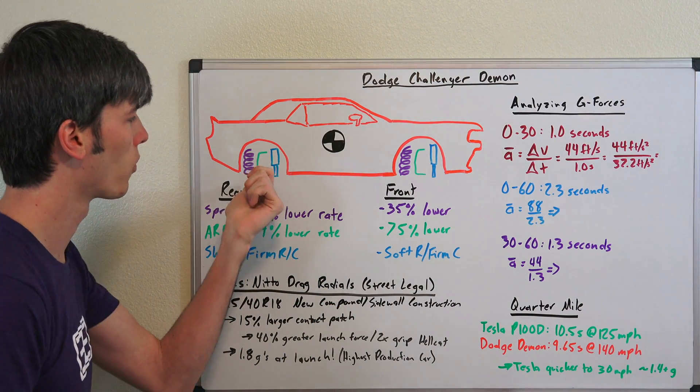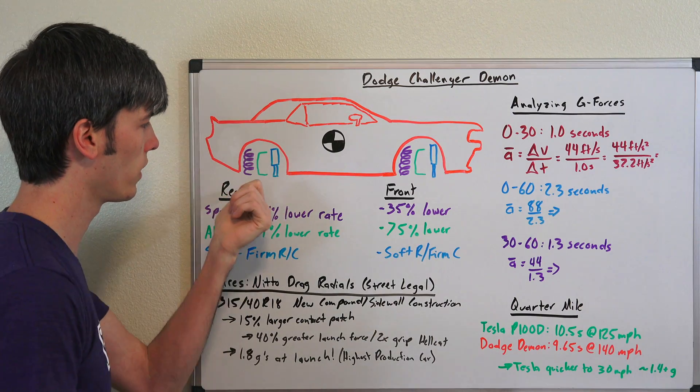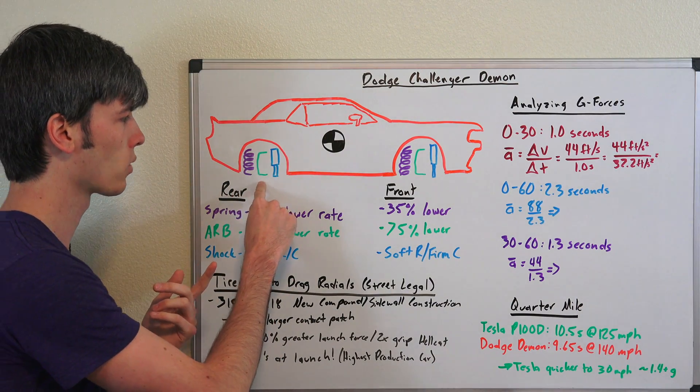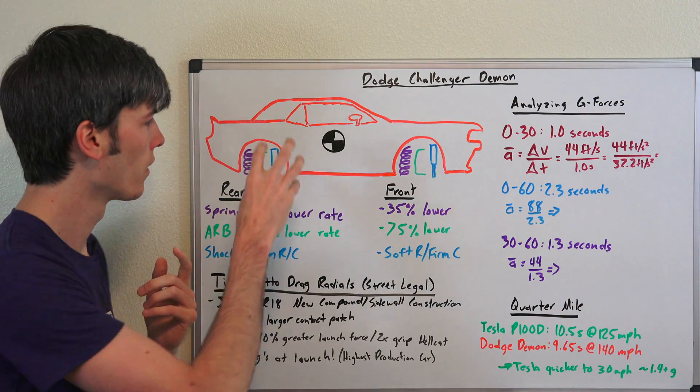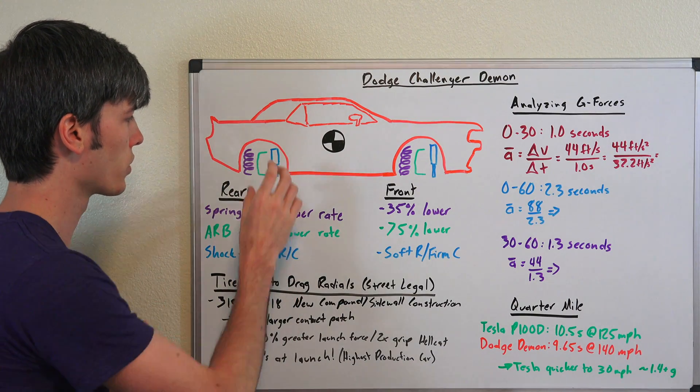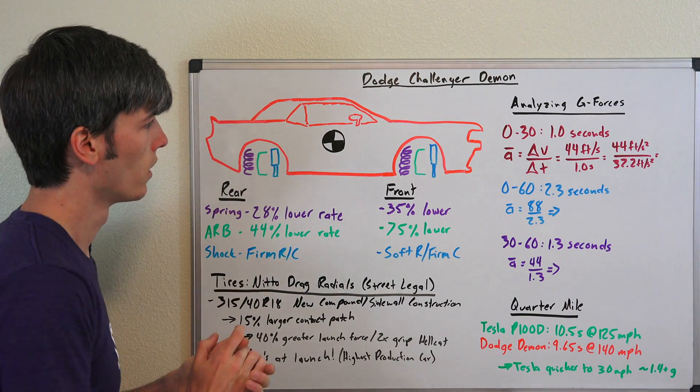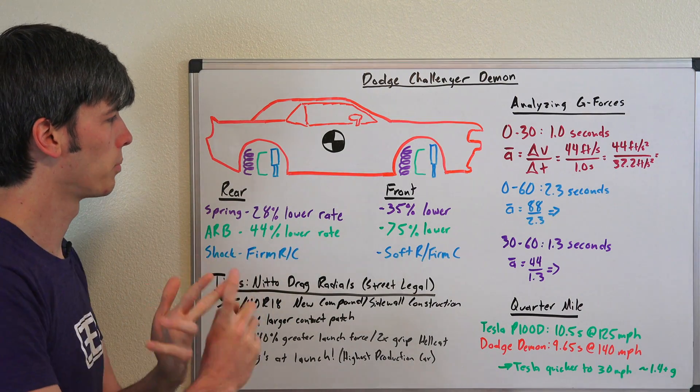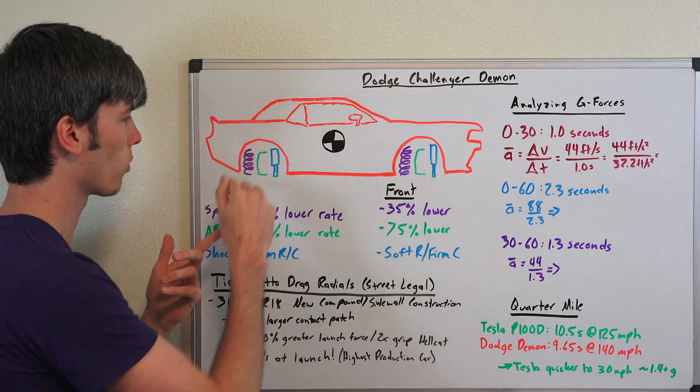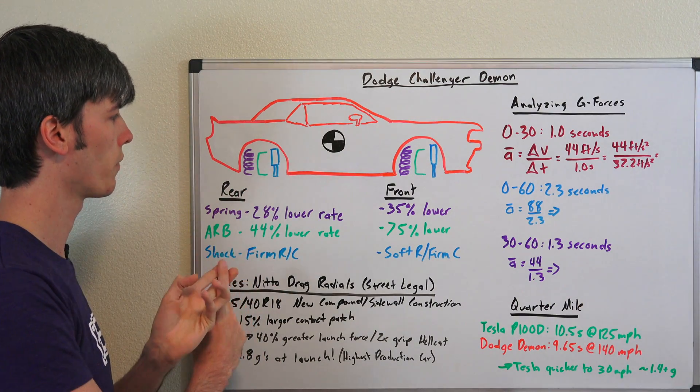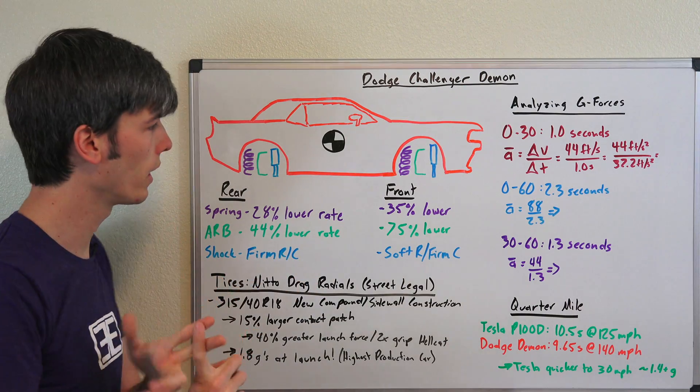Now how does it do that? Well in order to have the maximum force at the rear wheels to accelerate this vehicle, you need two things. The maximum force that this vehicle can apply is equal to the amount of weight resting on that rear tire multiplied by the frictional coefficient of that rear tire. And so you need to maximize both of those.